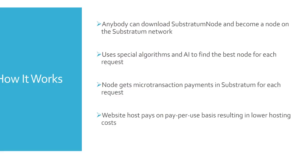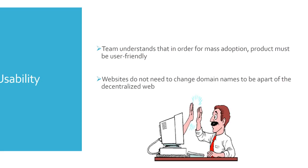So let's look at how this can become mass adopted. The team really understands that in order for mass adoption, the product must be user-friendly. Because you can have a great product, but if people don't know how to use it, it's never going to be used. To become a node on the Substratum network, all you have to do is download one software and click a few buttons. To surf the decentralized web, you don't need to download any special browsers — you can just use Google Chrome or Firefox. And when companies want to host their website on the decentralized web, they don't need to change their domain names.